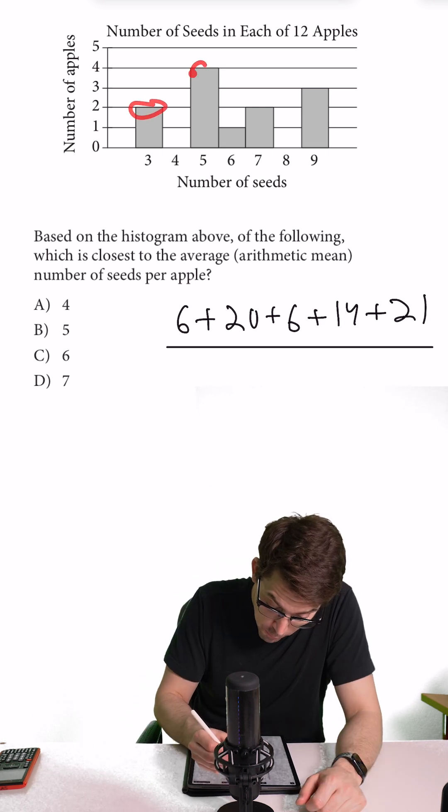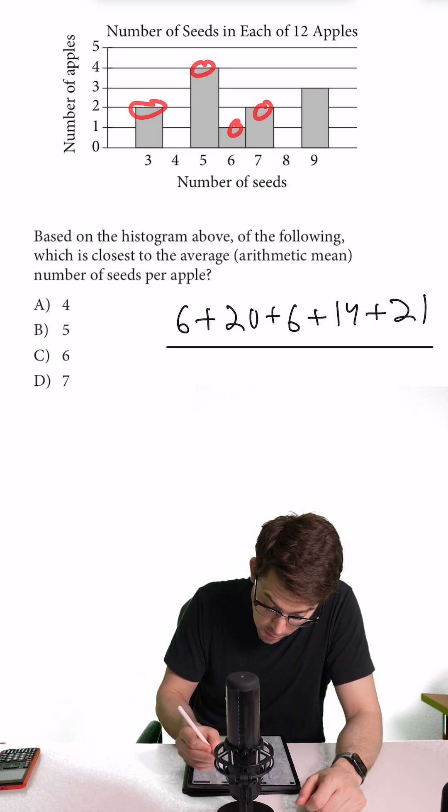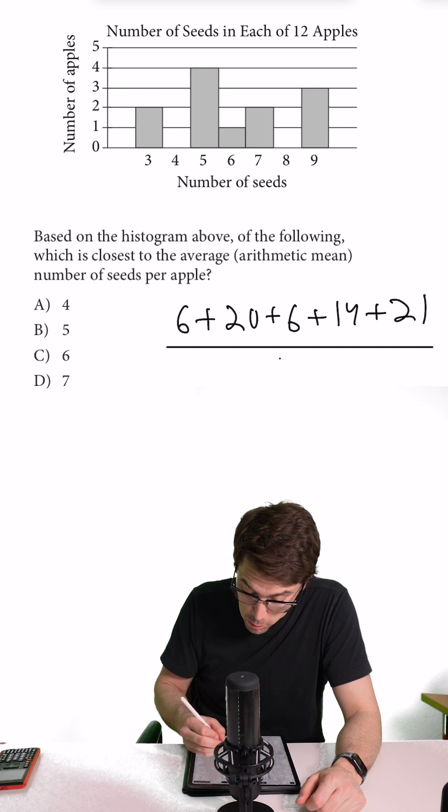Two apples here, plus four, plus one, plus two, plus three. That is going to give us a grand total of 12 apples.